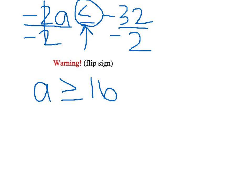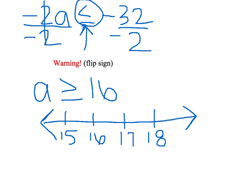We need to make our graph line and we'll put our numbers on here: 15, 16, 17, and 18. Since it's greater than or equal sign, we're going to need to use brackets on the 16. And a is greater than, so our line will be going this way. And that's what our line graph looks like.